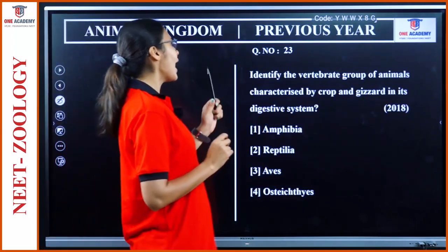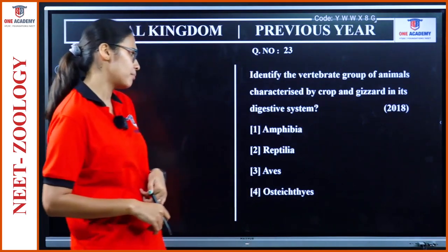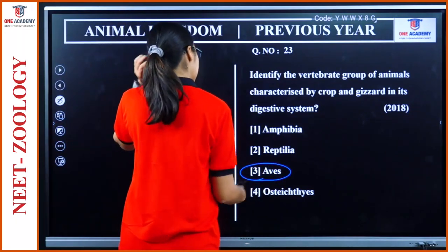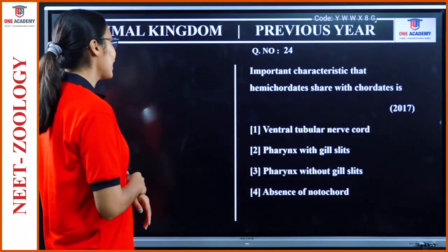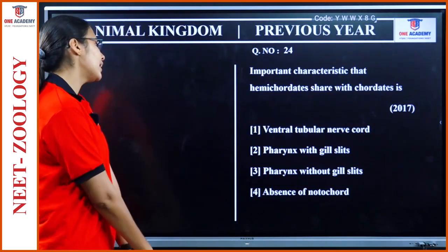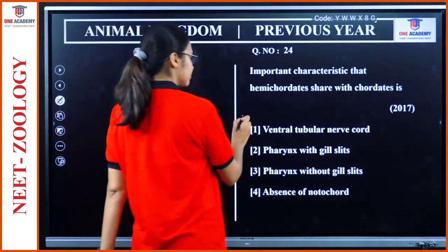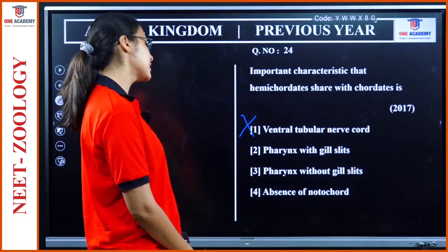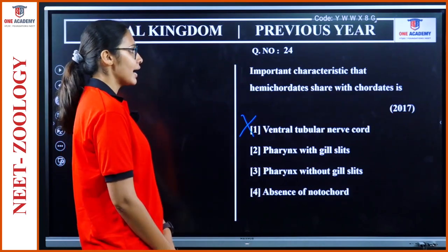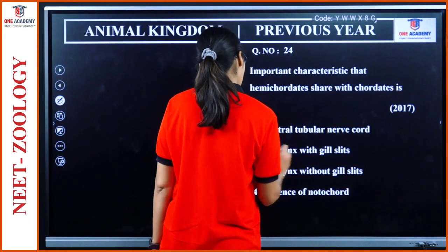Question 23: 'Identify the vertebrate group characterized by crop and gizzard in the digestive system.' Similar to a previous question — answer is Aves. Question 24: 'Important characteristic that hemichordates share with chordates.' Ventral tubular nerve cord — no, chordates have dorsal nerve cord. Pharyngeal gill slits — yes, both chordates and hemichordates have pharyngeal gill slits. That is the answer.